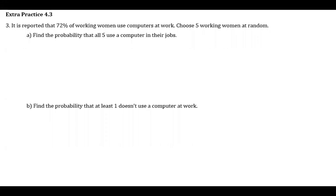Number three says it is reported that 72% of working women use computers at work. Choose five working women at random. Find the probability that all five use a computer in their jobs. So we're looking for the probability that all five use a computer. If you pick a working woman, they're going to have a 72% chance of using a computer at work, and we're doing five selections.